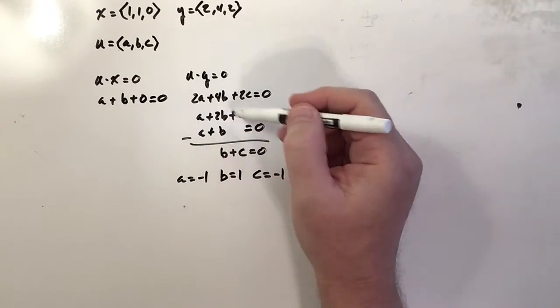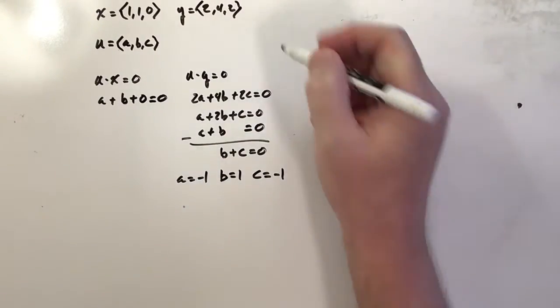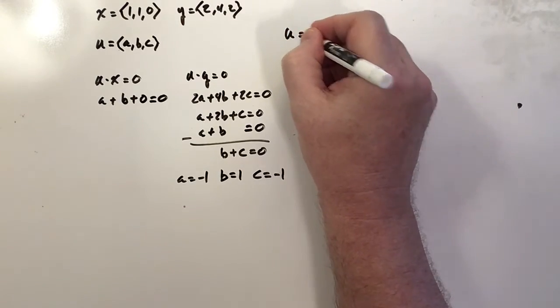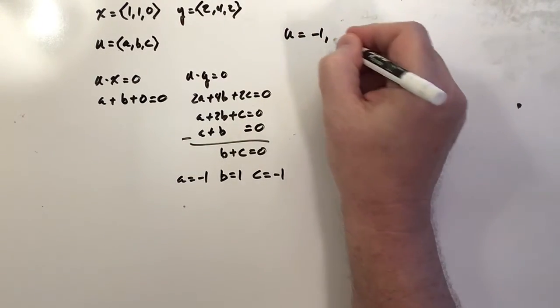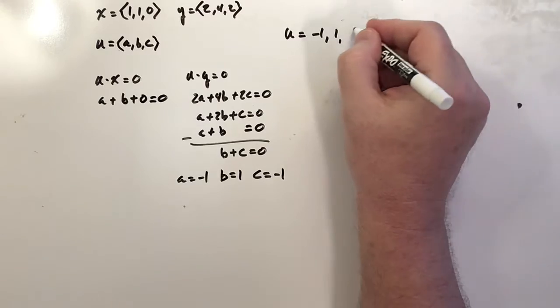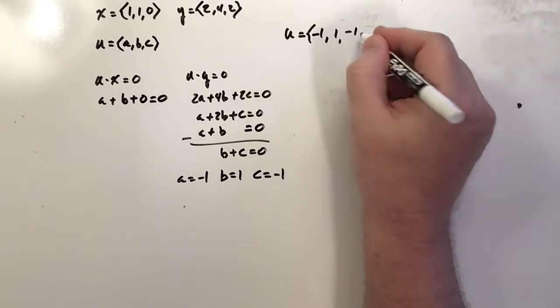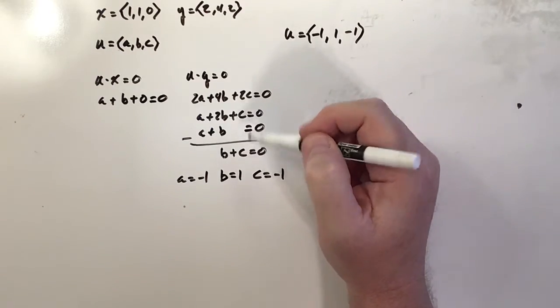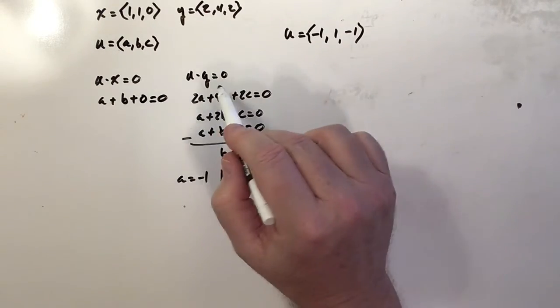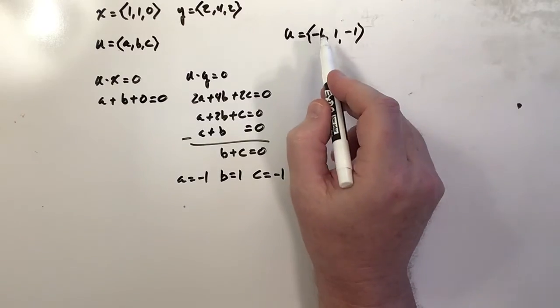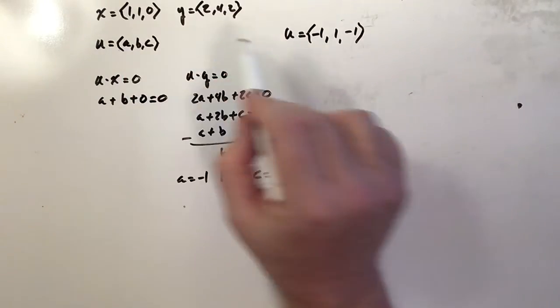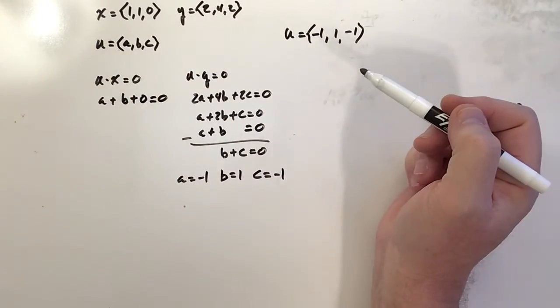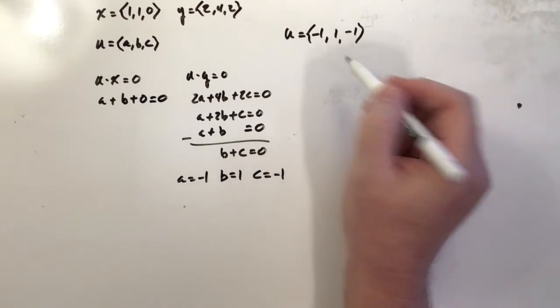Now this set of components satisfies both of the dot products being 0, which means the vector u, which now comprises of negative 1, 1, and negative 1, is absolutely perpendicular to both of these. And you can check it if you want, but because it solved this system, it absolutely derived from the true dot products. So if I take this dotted with this, I'll get 0, and this dotted with this, I'll get 0.